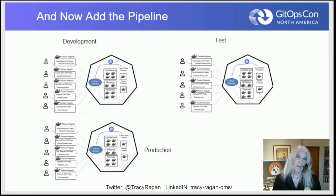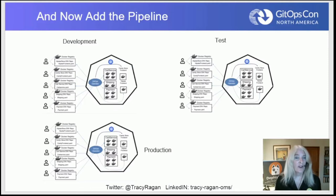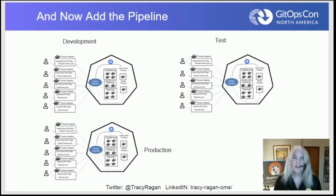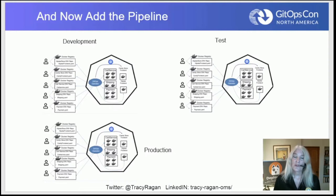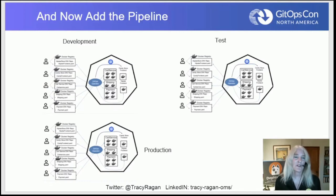Now we're going to add the pipeline — an environment for development, an environment for test, and an environment for production. It can add up a lot faster than you realize. In this case, we have five YAML files including each of their front ends, and now we have 15 YAML files that we're managing. That's all in different repositories because each of those are going to be managed in their own GitHub repository representing their environment. You're going to have a lot of YAML files no matter how you slice it.